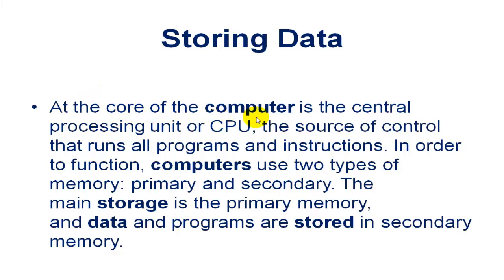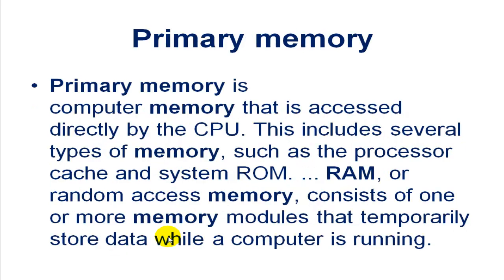At the core of the computer is the Central Processing Unit, or CPU — the source of control that runs all programs and instructions. In order to function, computers use two types of memory: primary and secondary memory. The main storage is the primary memory, and data and programs are stored in secondary memory.